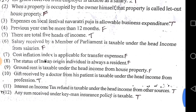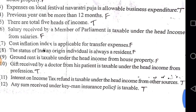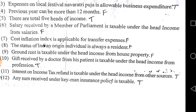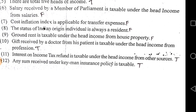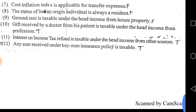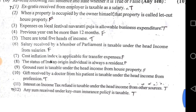Salary received by a member of parliament is taxable under the head 'Salaries' — False. Cost Inflation Index is applicable for transfer expenses — False. The status of an Indian origin individual is always a resident — False. Ground rent is taxable under the head 'Income from House Property' — False. Gift received by a doctor from his patient is taxable under the head 'Income from Profession' — True. Interest on income tax refund is taxable under the head 'Income from Other Sources' — True. Any sum received under a Keyman Insurance Policy is taxable — True.